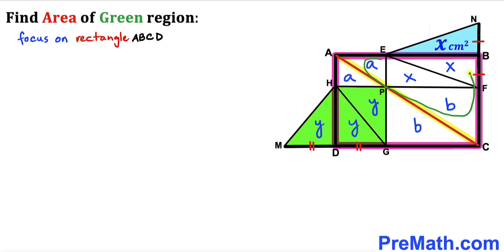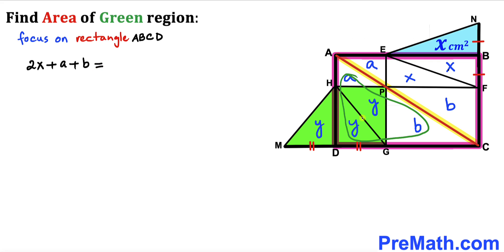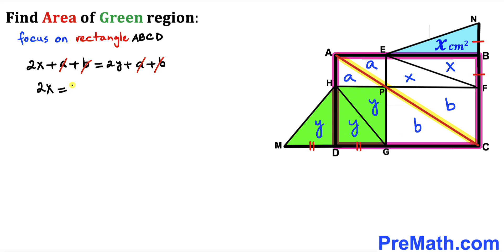The total area on one side equals the total area on the other side. Focusing on the top portion: this equals X plus X, which is 2X, plus A plus B. So 2X plus A plus B equals the other total area: Y plus Y, which is 2Y, plus A plus B. We can see that A cancels with A and B cancels with B, so we are left with 2X equals 2Y. Dividing both sides by 2 gives us X equals Y.